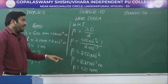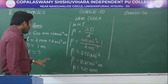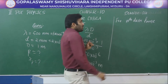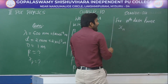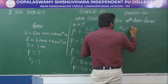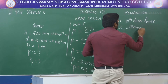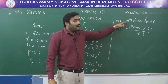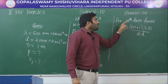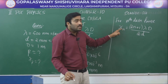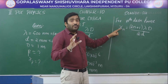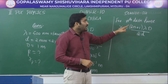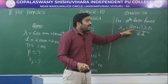Next, to find the position of the 7th dark fringe, we use the formula for the nth dark fringe: xₙ = (2n + 1) × lambda D / (2d). For the 7th dark fringe, consider n = 6. This is a very important point: in the dark fringe formula, n starts from 0, so for the 7th dark fringe take n = 6, not 7.